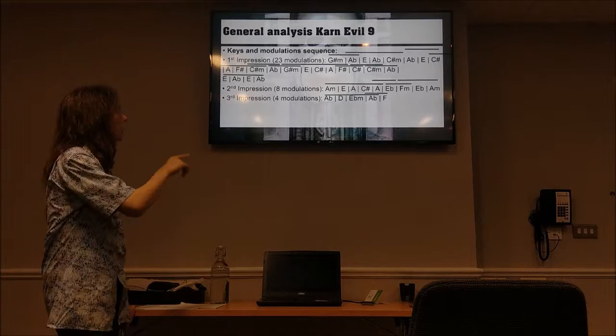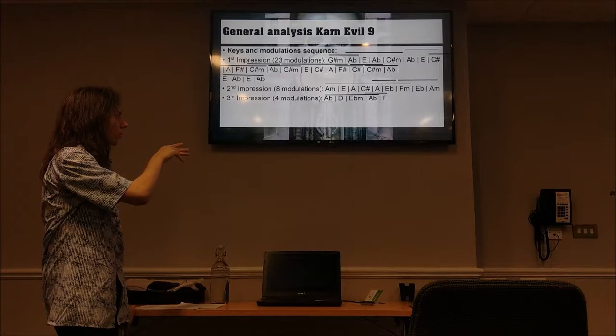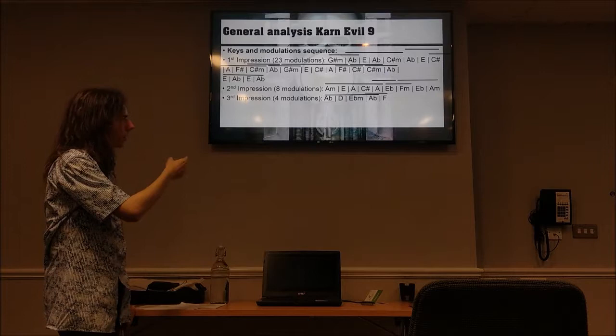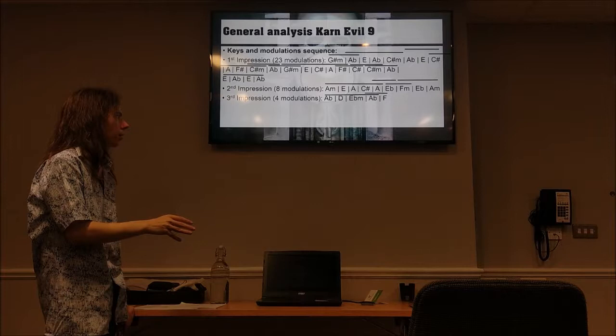Moving from G sharp to E is of course a third, so that's a mediant connection — a 3-1 if you will. From E to C sharp is the same, C sharp to A is the same, A to F sharp is the same — so that all makes sense. F sharp to C sharp is of course a dominant relationship: F sharp being the tonic and C sharp being the dominant, so that's a 1-5, which also makes a lot of sense in classical music.